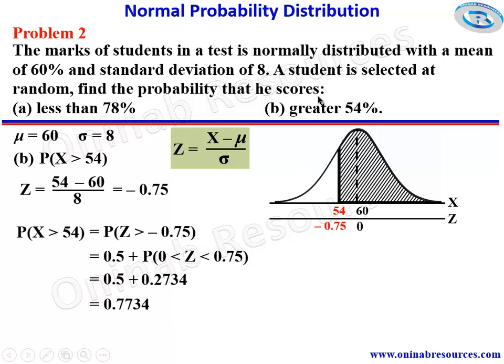That gives 0.7734 as the probability that the student selected at random scores greater than 54 percent. That's all for this tutorial. I hope you enjoyed it. Thank you for watching. Check the description section for the link to the first problem and other problems on normal probability distribution and other probability distributions. Goodbye!